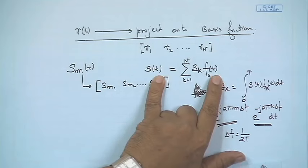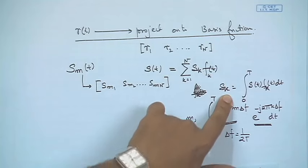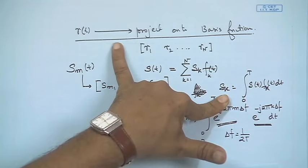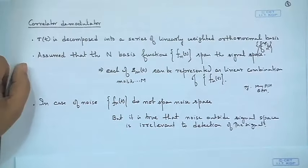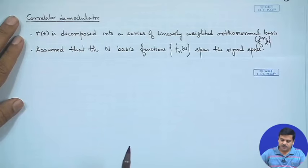This is the construction of the signal; decomposition is the reverse — breaking it into components. We apply the same philosophy on R(t). We assume the N basis functions span the signal space. If your basis functions do not span the signal space, when you expand the signal you are not reconstructing it in its entirety — there would be some error left. Since it is within our control, we find the basis functions using Gram-Schmidt orthogonalization: given a set of signals, we can construct orthogonal signals, and once we have those, we can do the rest of the processing.